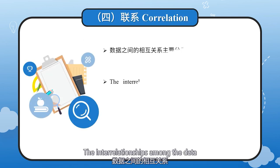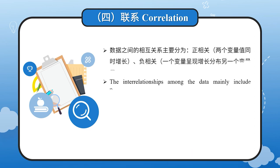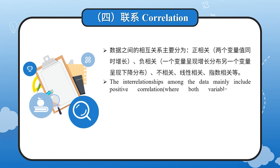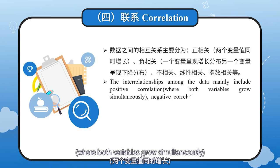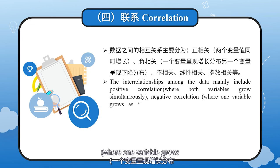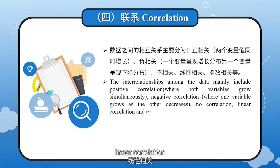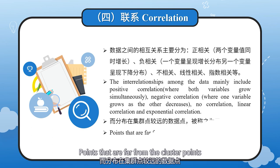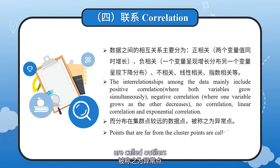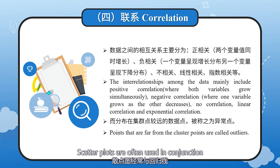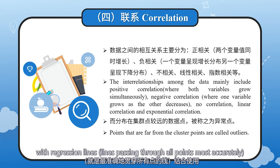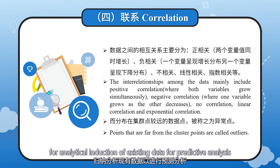The interrelationship between the data may include positive correlation, where both variables grow simultaneously; negative correlation, where one variable grows as the other decreases; as well as linear correlation and exponential correlation. Points that are far from the cluster points are called outliers. Scatter plots are often used in conjunction with regression lines — lines passing through all points most accurately — for analytical introduction of existing data and predictive analysis.